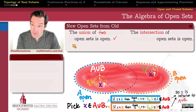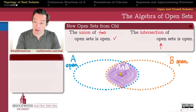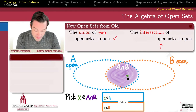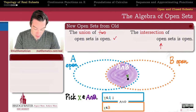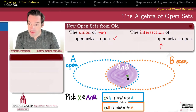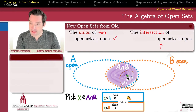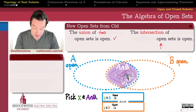We've shown that the union of two open sets is guaranteed to be an open set. Now what if we try intersection instead of union? The intersection is just that portion of the Venn diagram in the overlap of A with B. Pick an arbitrary X inside that intersection. If X belongs to the intersection, then both X belongs to A and X belongs to B must be true. Since A is open, X is an interior point of A, and since B is open, X is an interior point of B.